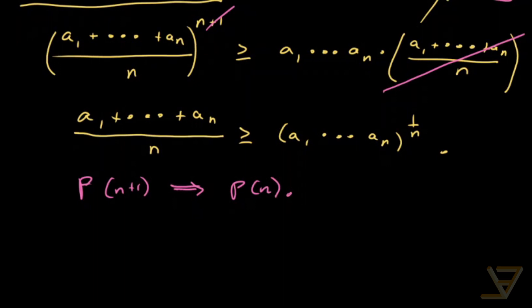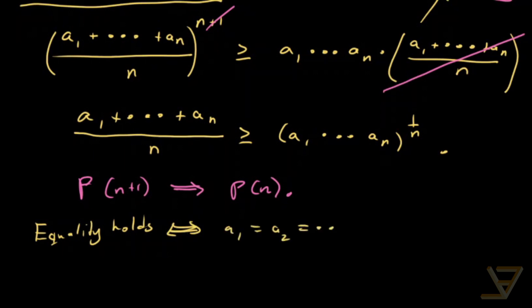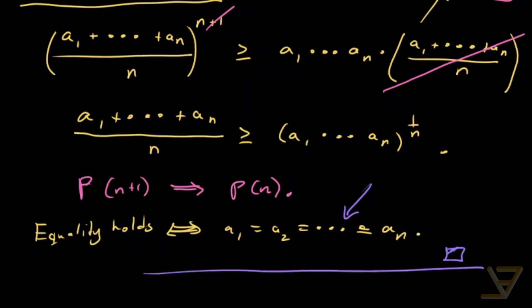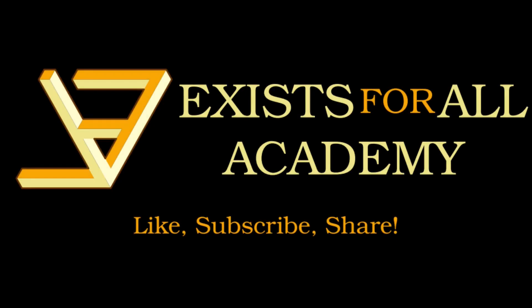The last thing I want to mention is that equality holds if and only if a1 = a2 = … = a_N for the general AM-GM inequality. I'll leave that proof to you — you just have to go through the three steps I did and show that equality holds in each part. Thank you for watching and I'll see you next time. Take care, bye.